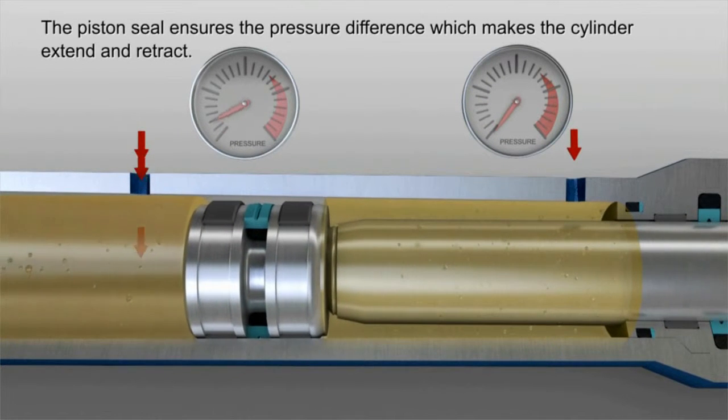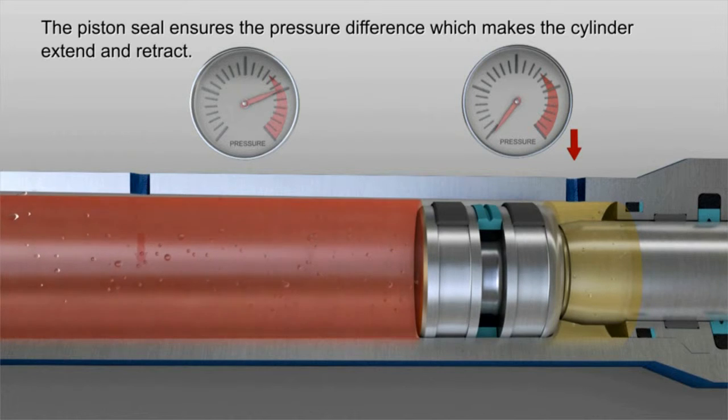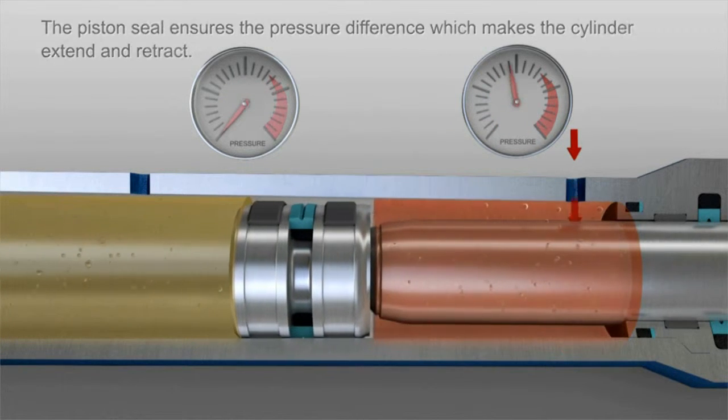The piston seal is a vital component within the cylinder. It seals the cylinder so that the pressure difference, which makes the cylinder extend and retract, is ensured.